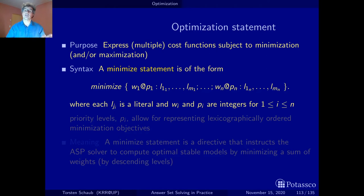The primitive optimization statement is a minimize statement with this keyword minimize, and in Clingo we'll see in a sec that this is preceded by a hash as usual. And there are also maximization statements but they are reduced actually to minimization statements as we will see on the next slide.